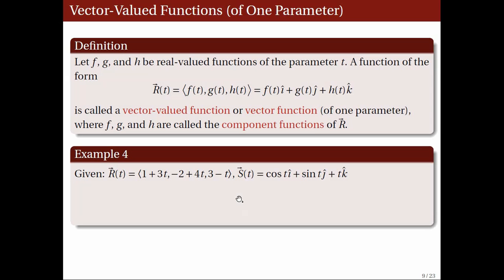Recall the linear and helical examples earlier, and let's form the vector-valued functions having the functions giving the x, y, and z coordinates as their components. For example 1, we have the vector function r of t with components 1 plus 3t, negative 2 plus 4t, and 3 minus t. For the helical example, we have the vector function s of t with components cosine t, sine t, and t.